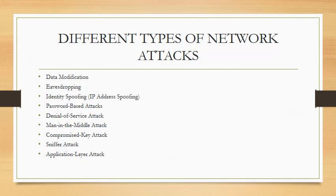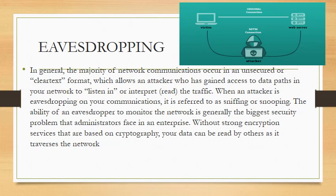Starting with the first one: eavesdropping. This is basically where someone, also known as the attacker, is trying to gain access to your network communications. They usually monitor your network traffic and try to decrypt or decipher your information. They can use this information to put it out in the open for people to see, or they take your information and try to sell it.